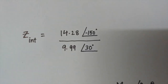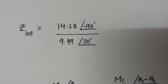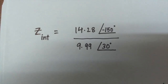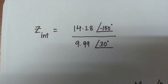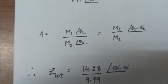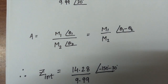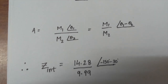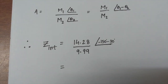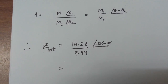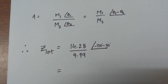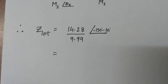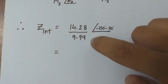Now I'm going to pull up an example. We have a problem where we need to divide two polar forms and find the value of Z. To divide polar forms, the rule is: m1∠θ1 divided by m2∠θ2 equals (m1/m2)∠(θ1−θ2). That is, we divide the magnitudes separately and subtract the angles. I've simplified this problem: we divide 14.28 by 9.99 and subtract the angles.